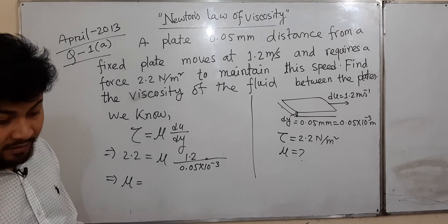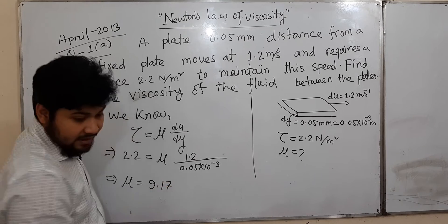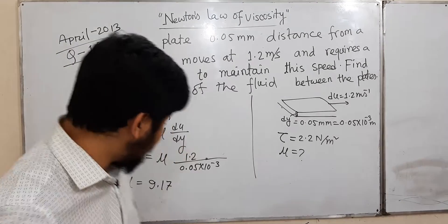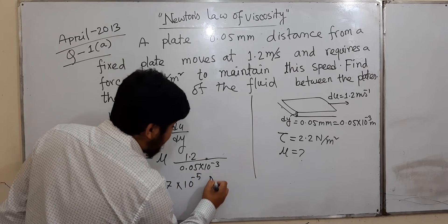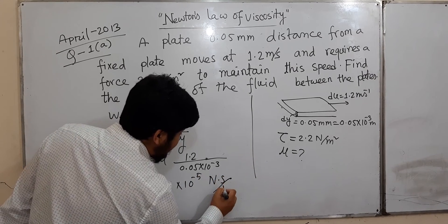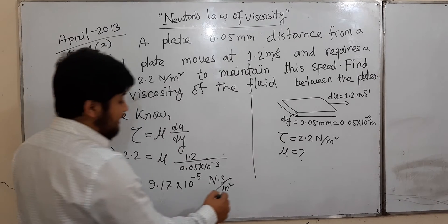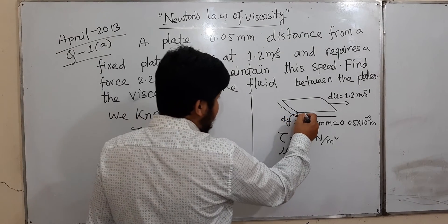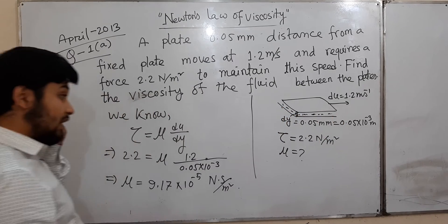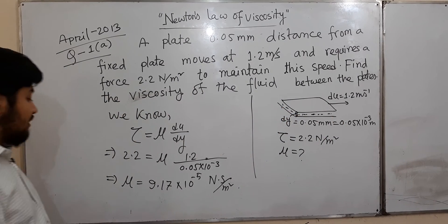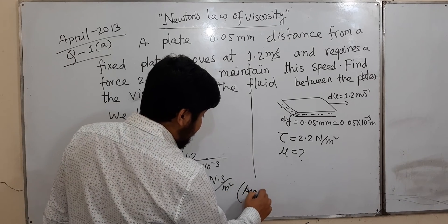The dynamic viscosity mu comes out to 9.17 × 10⁻⁵ Newton second per meter square. This is the fluid viscosity, the dynamic viscosity — and this is the answer.